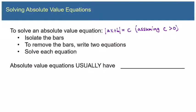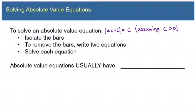Here is our procedure for solving absolute value equations where the bars equal some positive number. First, make sure the bars are isolated. If there are any other terms on the left side of the equation with the bars, move those over to the right side. Any coefficients in front of the bars, divide both sides by that coefficient. Then to remove the bars, write two equations: what was inside the bars equals the positive of what's on the right side, and what was inside the bars equals the negative of what's on the right side. Solve each equation — that gives you two answers.